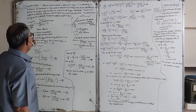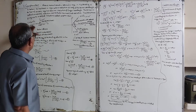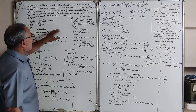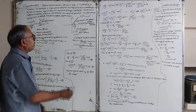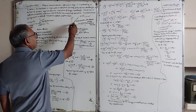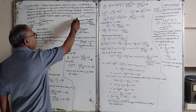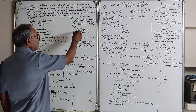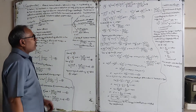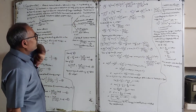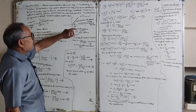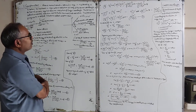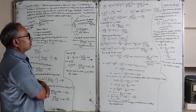After the photon strikes the electron, we consider conditions before and after the collision. The scattered photon moves at angle theta with the x-axis, and the electron recoils at angle phi with the x-axis. The scattered photon has frequency nu-dash, so its momentum is h-nu-dash divided by c and its energy is h-nu-dash.